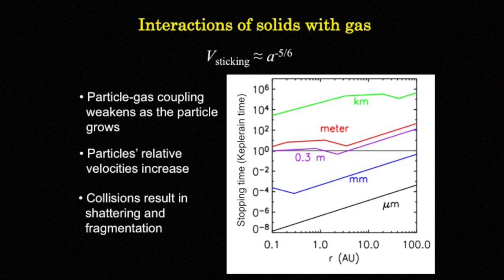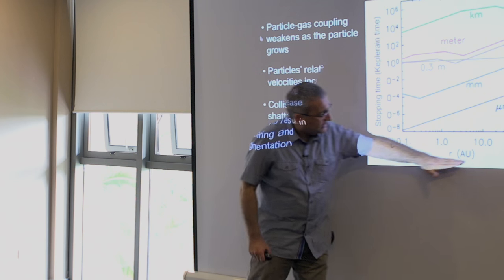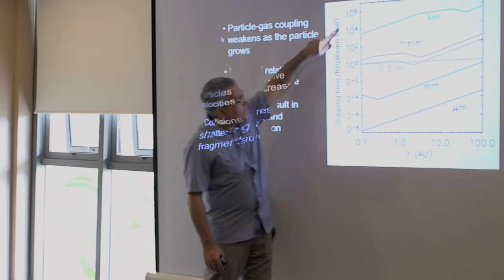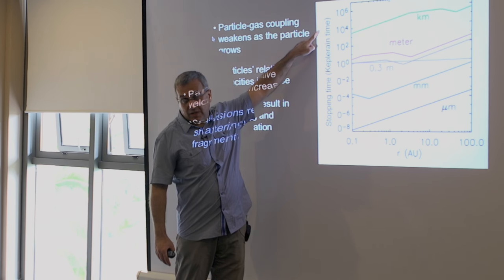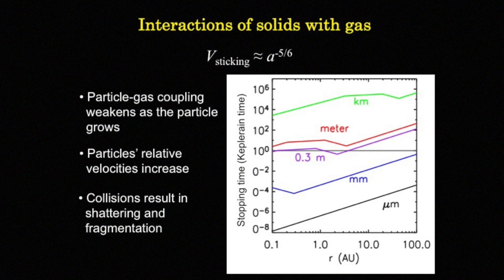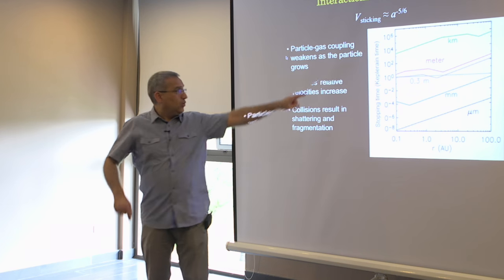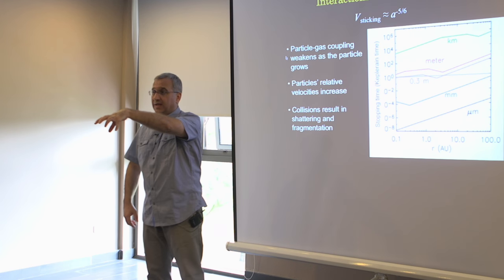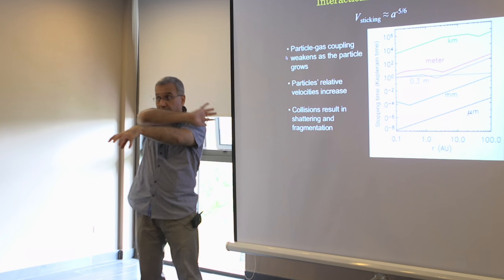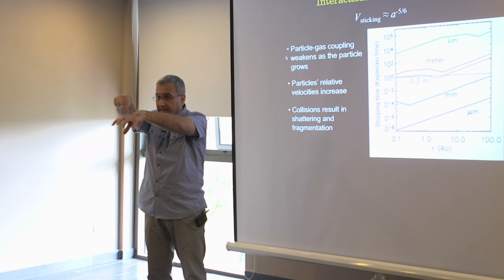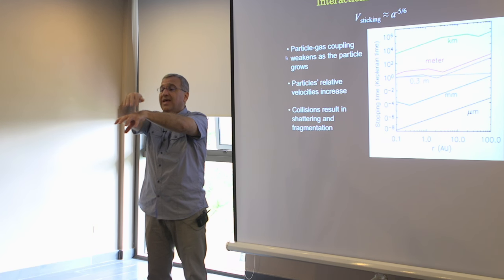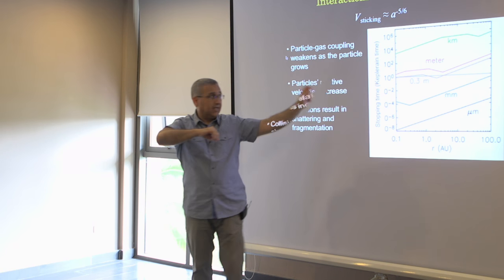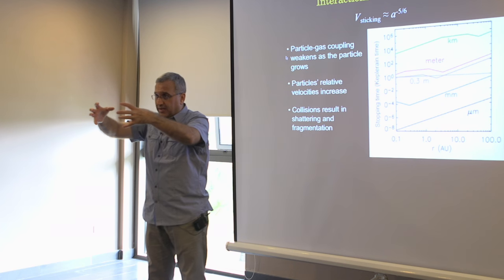What I'm showing here is something very interesting. This shows the radial distance from the central star on a logarithmic scale, and the stopping time in Keplerian time. At, say, 10 AU, you take an object — the different colors show the radius of the object — give it a Keplerian orbit, calculate its Keplerian velocity using F = ma, and release it. How long will it take for it to lose its individual motion and start moving with the gas? For a kilometer-sized object, it takes a long, long time. For a small micrometer object, it takes a very, very short time.